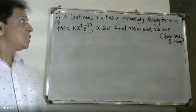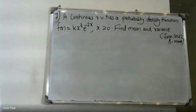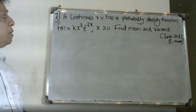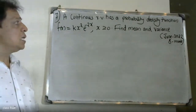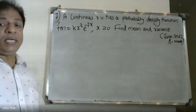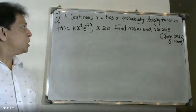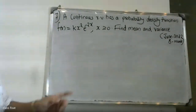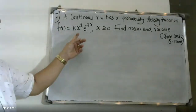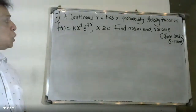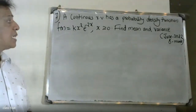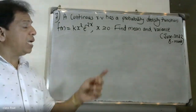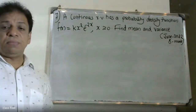Good morning, students. At the university question, a continuous random variable class has a probability density function f(x) equal to k x squared e raised to minus 2x, for x greater than or equal to 0. Find the mean and variance.